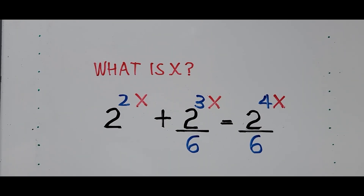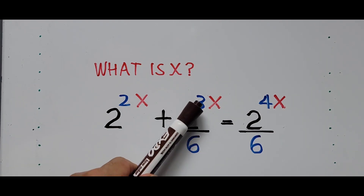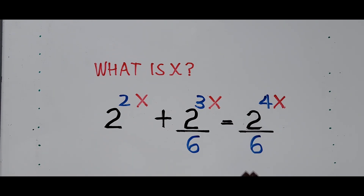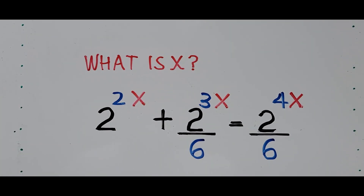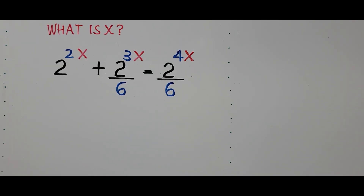Welcome to Cassiano Easy Math. This video is about solving an exponential equation: 2 raised to the 2x plus 2 raised to the 3x divided by 6, equals 2 raised to the 4x divided by 6. We're looking for the value of x. For those new to my channel, you can support me by hitting that like button and subscribing.